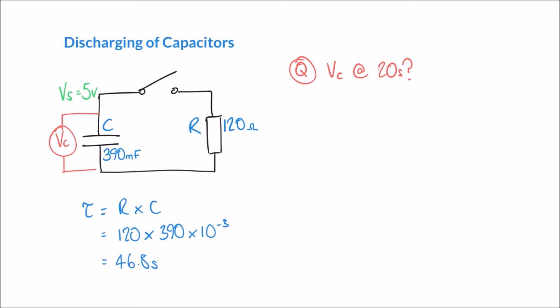Now we can find VC at 20 seconds using our decay curve formula: VC equals VS times e to the power of minus T over tau. Substituting the values — VS is 5 volts, T is 20 seconds, and tau is 46.8 seconds — gives VC equals 5 times e to the power of minus 20 over 46.8. Evaluating that in a calculator gives an answer of 3.26 volts.